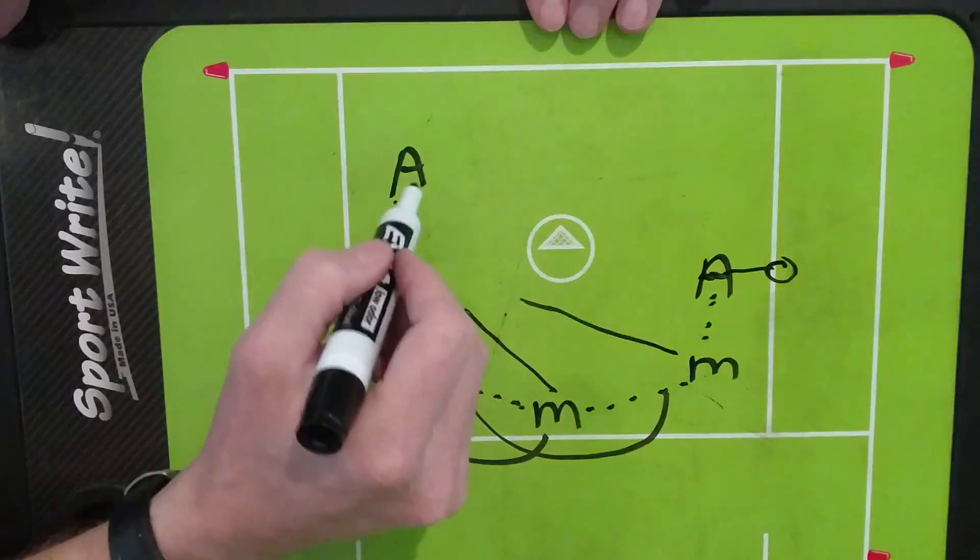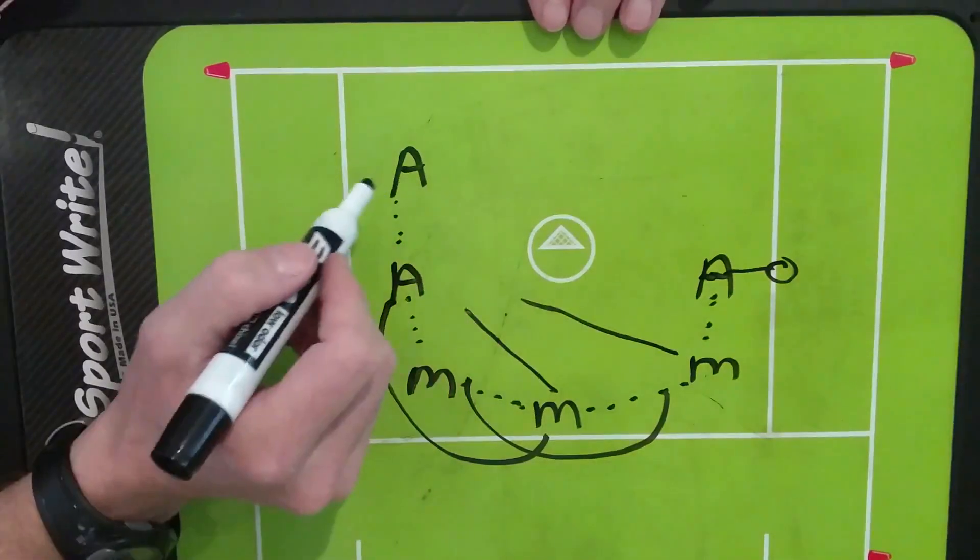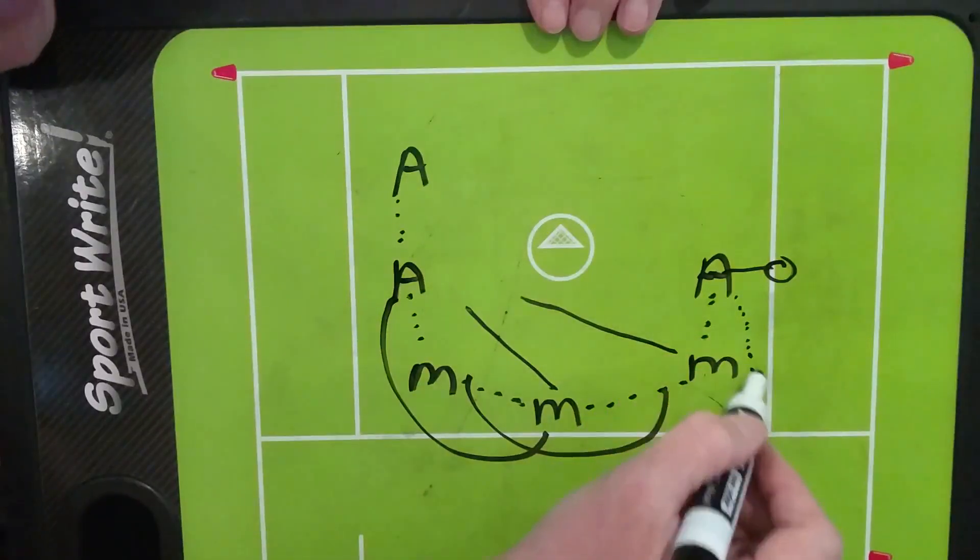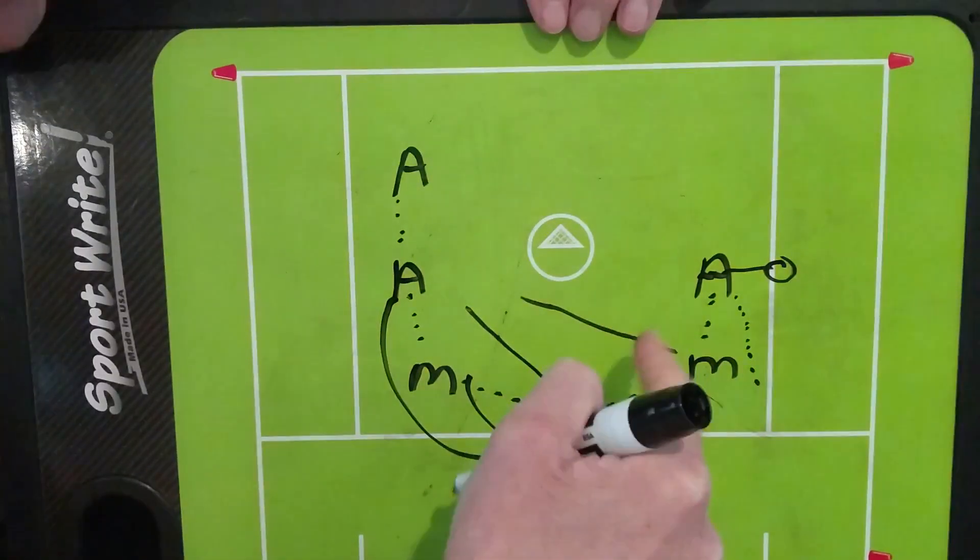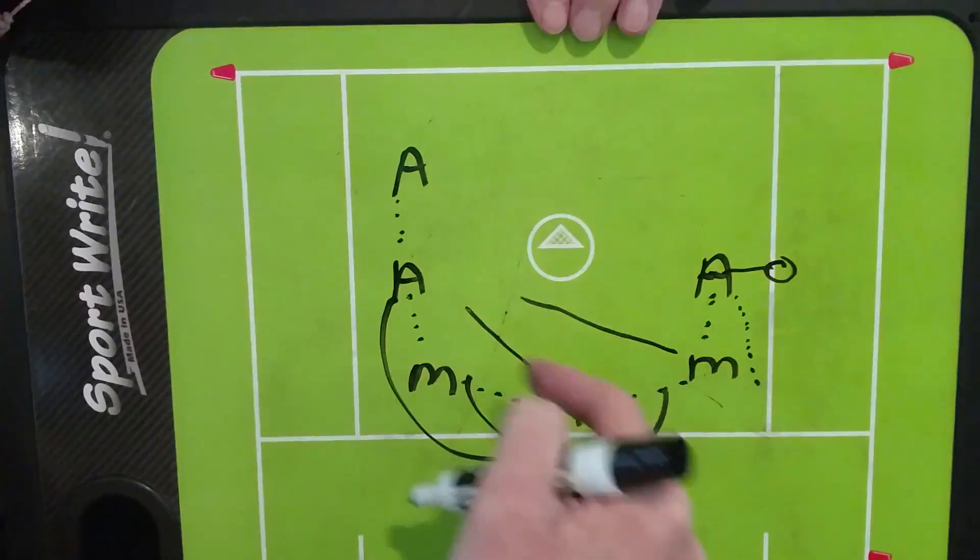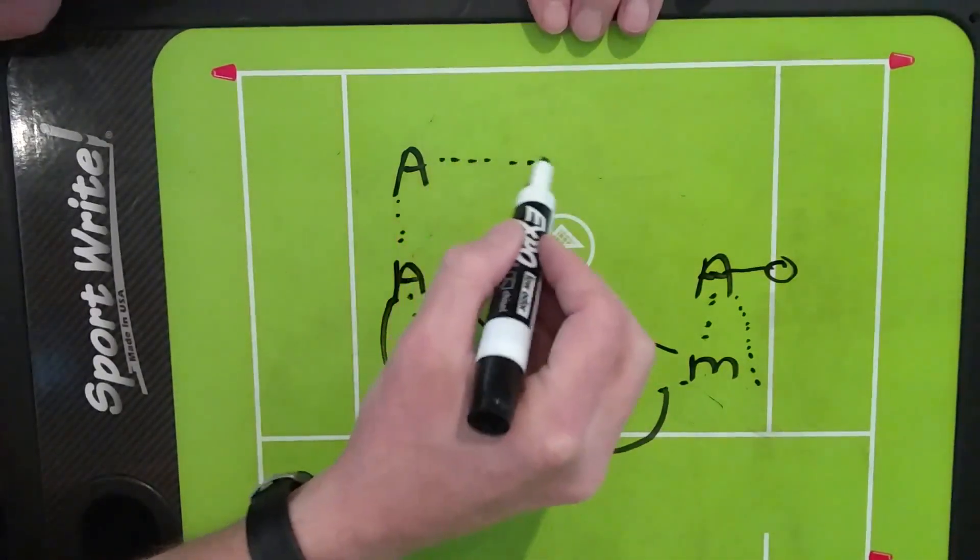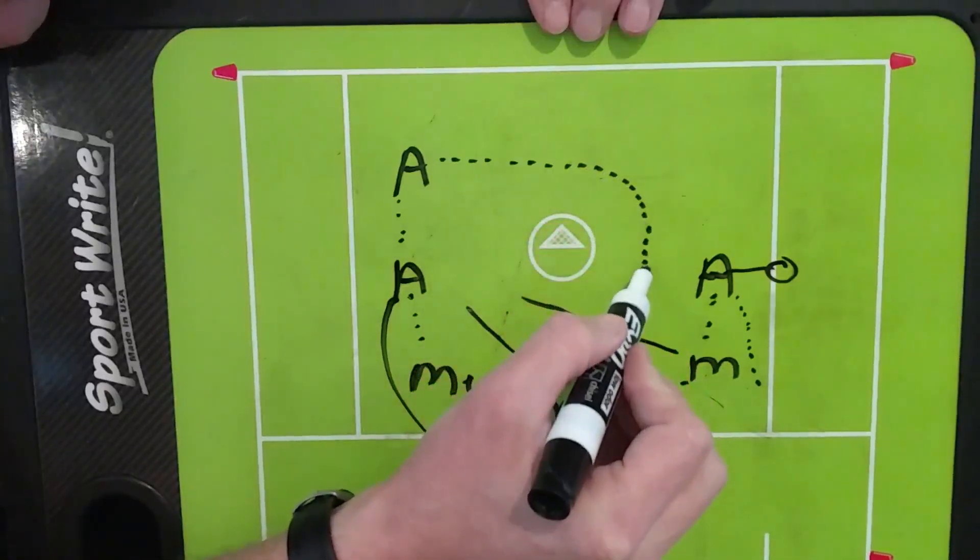While that's all happening, the player with the ball here is floating up top, and he is actively looking to these inside cuts like he's going to try to pass the ball. While all that's happening, this player has slowly made his way to here.